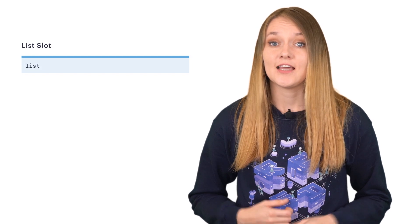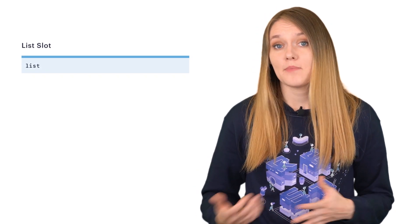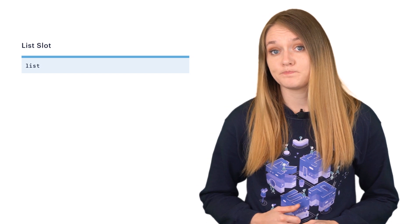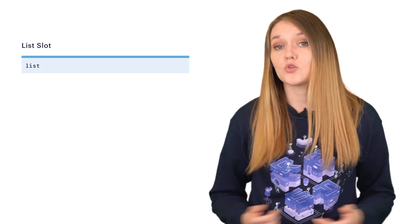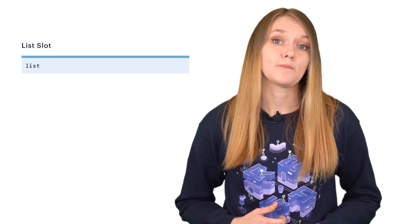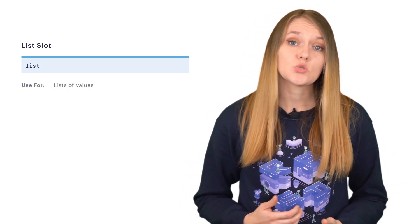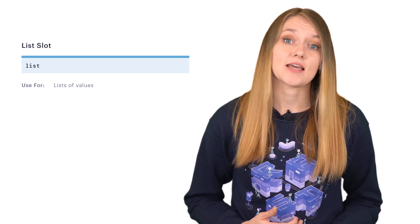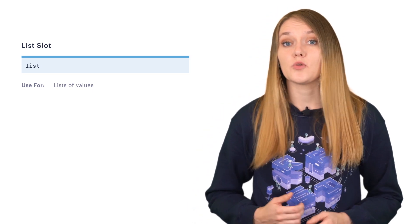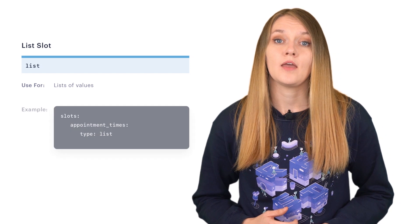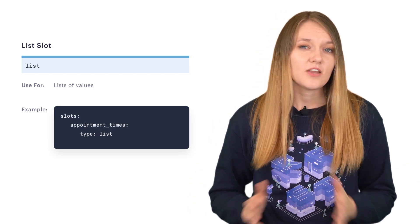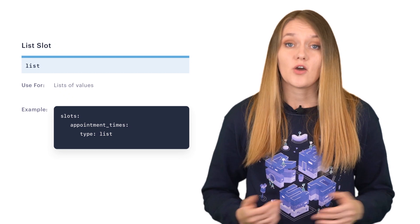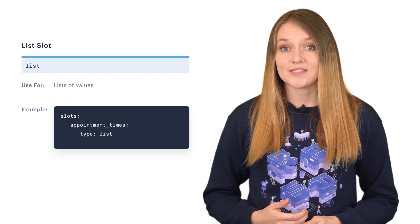Sometimes your NLU model may return multiple values for the same entity label and you may want to store those values as slots as well. This is where list slots are very useful, because they are designed to store information with multiple values. The length of the list doesn't really make a difference — what matters is whether or not the slot was set.